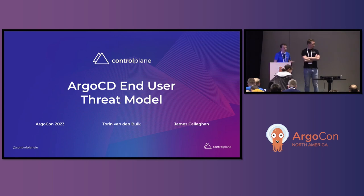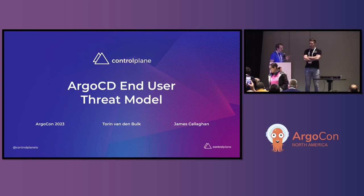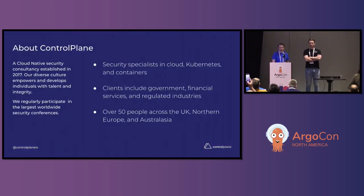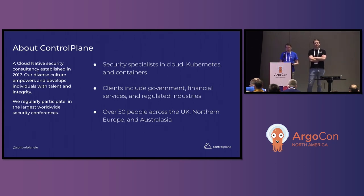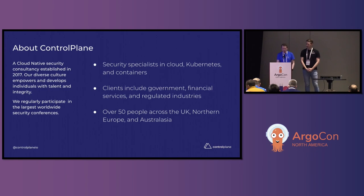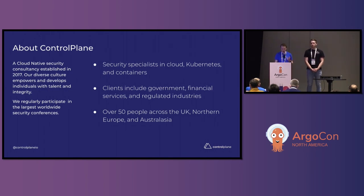My name is James Callaghan. I'm a principal consultant at Control Plane, and I'm here with my esteemed colleague, Torrin. At Control Plane, we are a cloud-native security consultancy established in 2017. We are security specialists in Kubernetes, cloud, and container security, but we do this for highly regulated organizations. We're over 50 people now across the UK, Northern Europe, and Australasia, and we are still expanding.